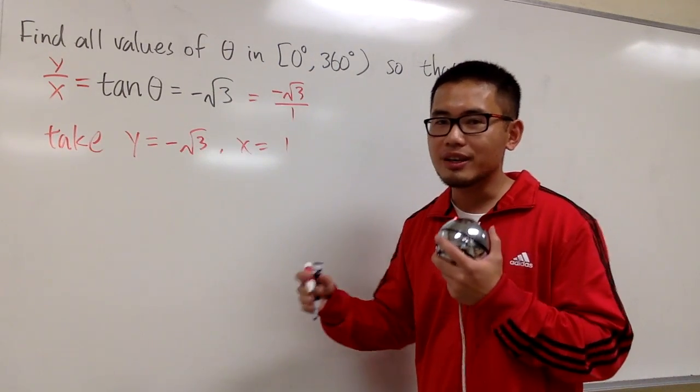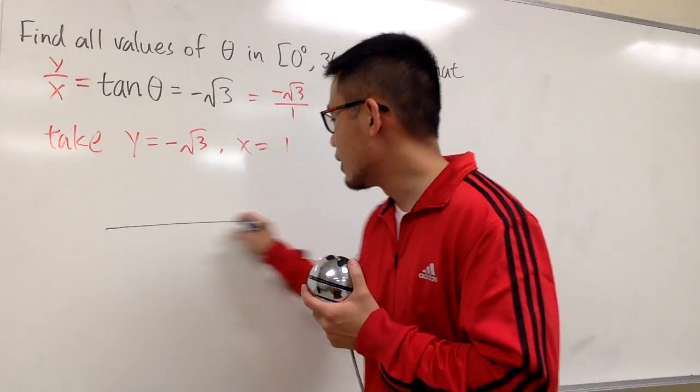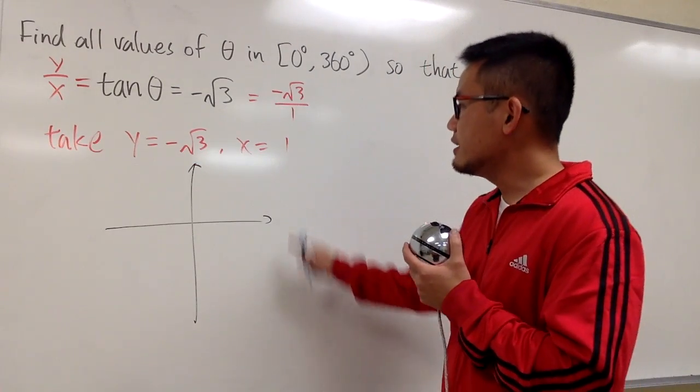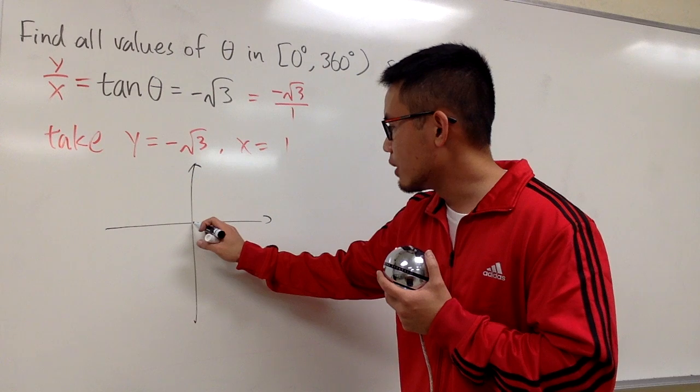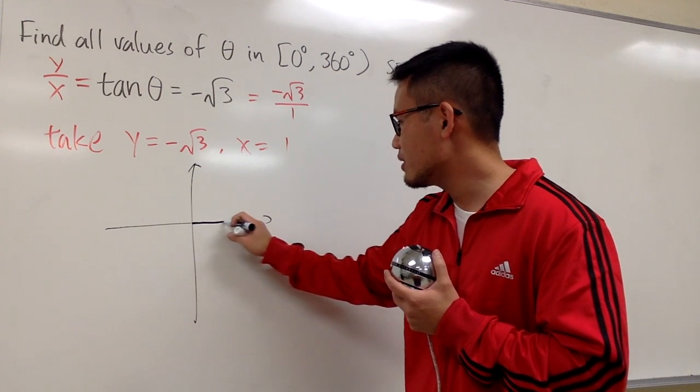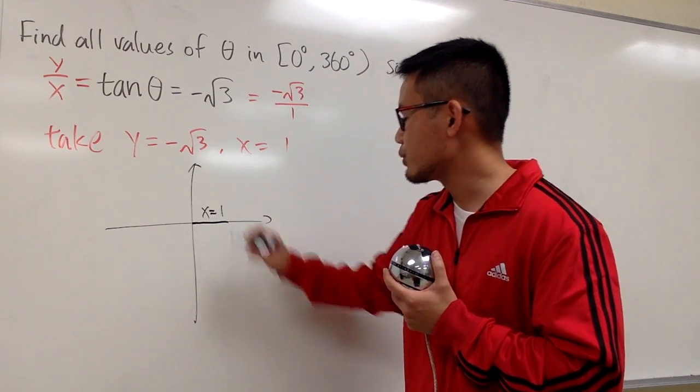From here, we can come up with a picture. Let's do so right here. We know x = 1, so it's positive 1, going to be right here. Let me label this as x = 1.